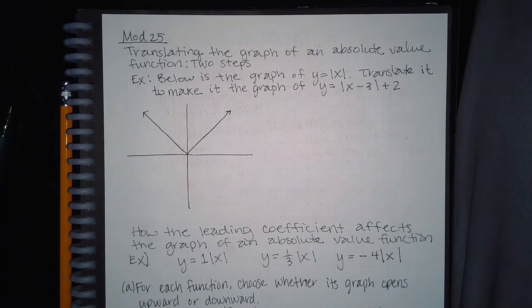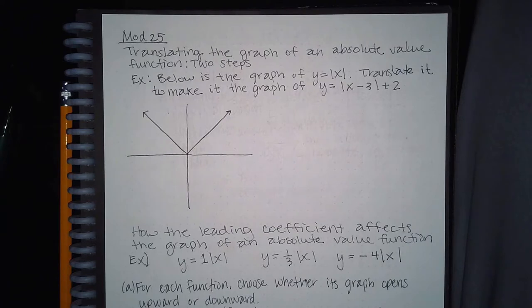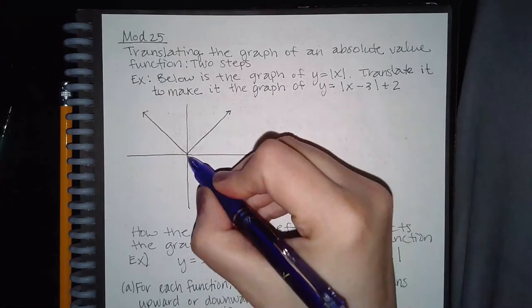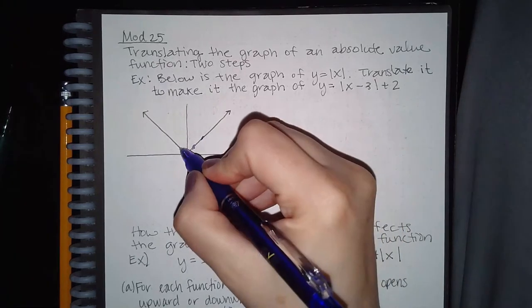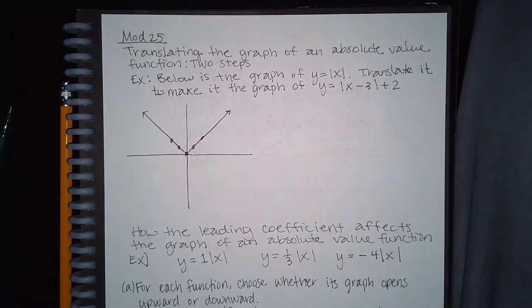This is module 25. Knowing what we know about transformations, we should be able to do the rest of these problems fairly simply. The first topic — translating the graph of an absolute value function in two steps — we've done this before with squared functions. You take the common points: (0,0), (1,1), (2,2), (-1,1), and (-2,2), and start shifting them around. Since you're given an image, you can literally take the points and move them to the new spots.